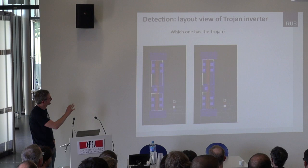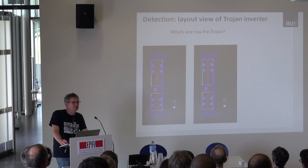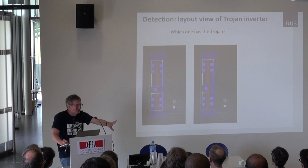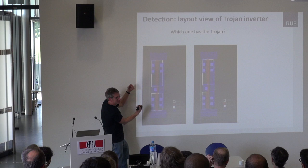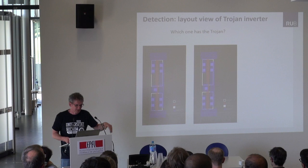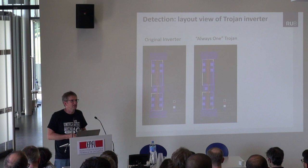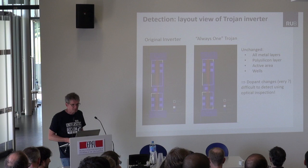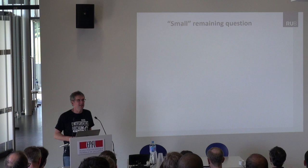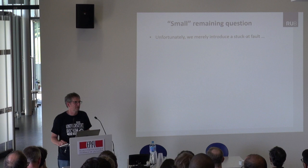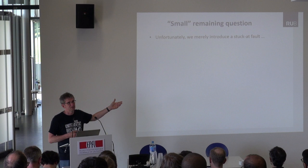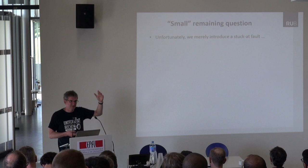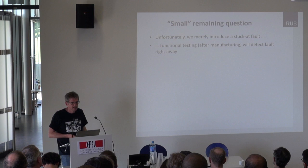Question to the audience: which of these two inverters has a trojan? This is a joke, because the doping would be from the back side — you will not be able to see it. All the standard detection methods will fail in this case. To be honest, what we did from a VLSI point of view is really simple: we had a CMOS inverter and introduced what's called a stuck-at fault — permanently fixing this inverter to output a constant one. This is not very sophisticated, and if you do that before functional testing, this fault will be detected and the chip thrown out.